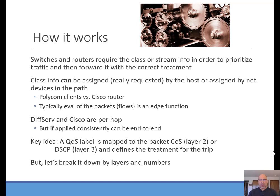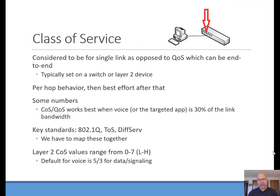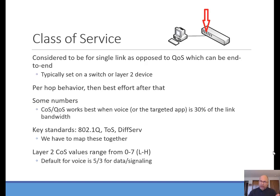Let's look at some numbers. Class of service is per hop or single link, and typically happens on a switch. The value ranges from zero to seven, encoded with three bits, and is usually mapped up to a layer 3 value. A common rule is that priority handling should be limited to 30% of link bandwidth. The key standards to understand start with 802.1Q and then type of service, and later differentiated services. The goal is to figure out how to map those together — for example, voice data defaults to a value of five (high priority) and signaling to a lower but still elevated priority.